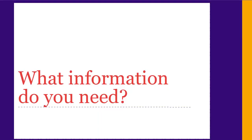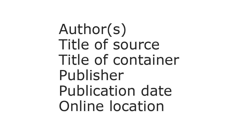Next, we'll look at what information you need to create a citation. APA requires specific pieces of information about each of your sources. These include the author, the title, the title of the item that the source is located in, the publisher, date, and the information you need to locate a copy of the source. These pieces of information look a bit different for different types of sources.